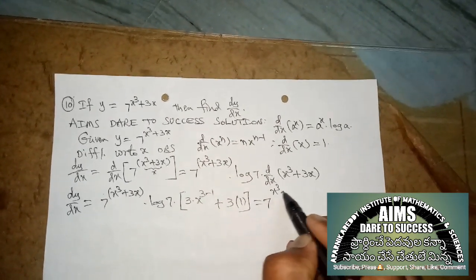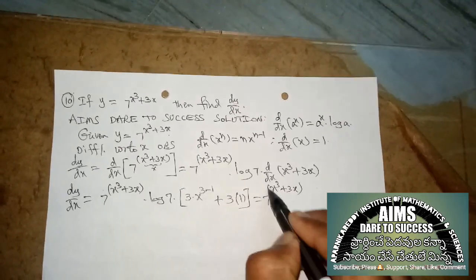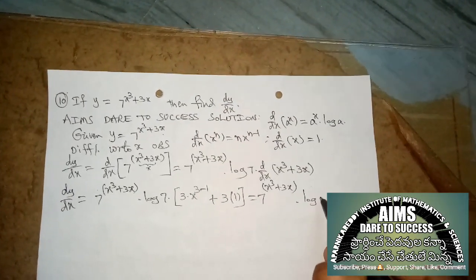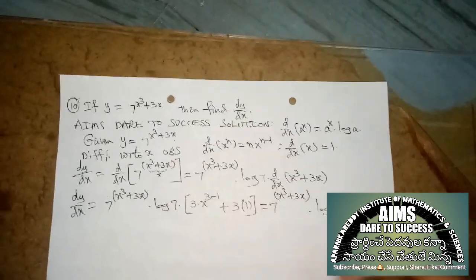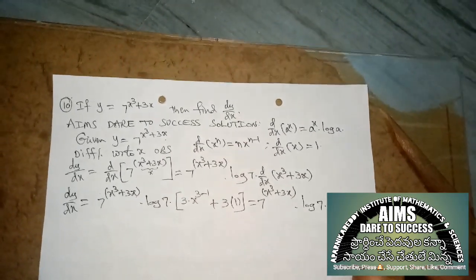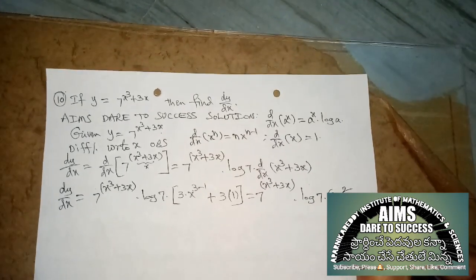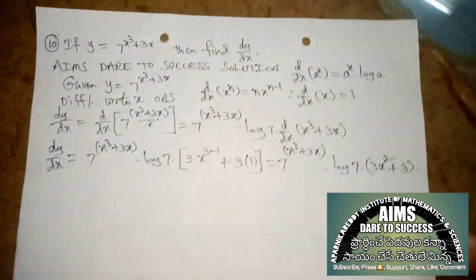The final answer is 7 power (x³ + 3x) log(7) into (3x² + 3). The answer is completed.